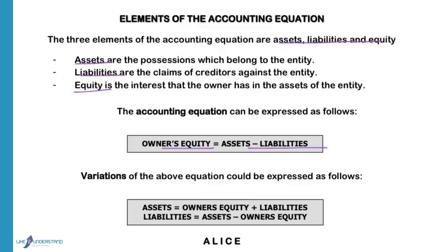The business belongs to the owner — what belongs to him are all the assets, and he is responsible for the liabilities. So the value of the assets less the liabilities is what belongs to the owner. A variation is: assets equals owner's equity plus liabilities, because all the assets are provided by money that the owner contributed or money that was borrowed.